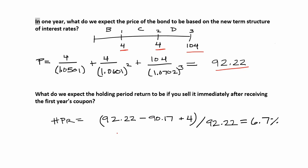The final step is to calculate the holding period return on our bond. We know we expect to be able to sell the bond in one year for $92.22. We know what we bought it for today — $90.17 under our old inflation expectations. We also received one coupon payment of $4. So the holding period return is (92.22 + 4 − 90.17) / 90.17, and we find the holding period return is 6.7 percent.